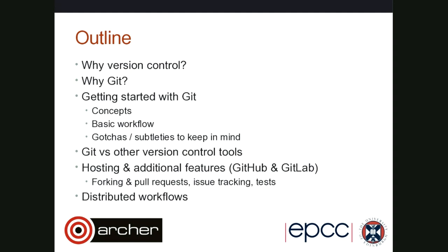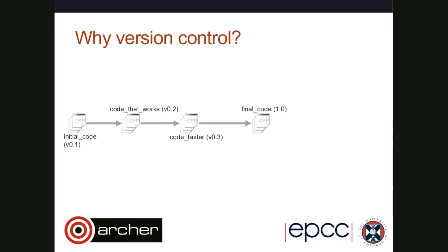I'll take a step back and compare Git to some other version control tools and see how they differ — not in great technical detail, but so you have an idea of what's going on under the hood. Then I'll talk briefly about additional features offered by websites like GitHub and GitLab, namely forking, pull requests, issue tracking, and continuous integration by means of testing. Finally, I'll sketch a few distributed workflows.